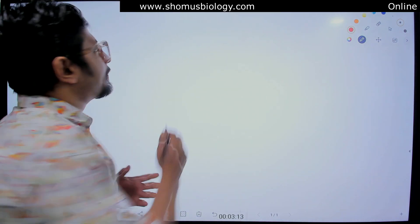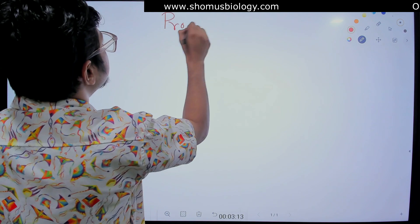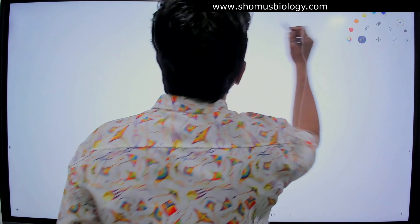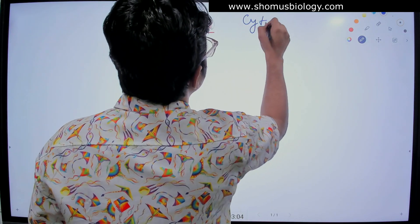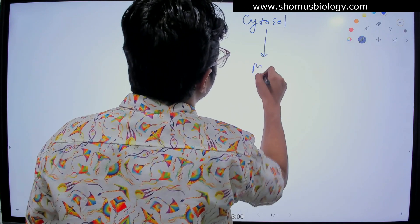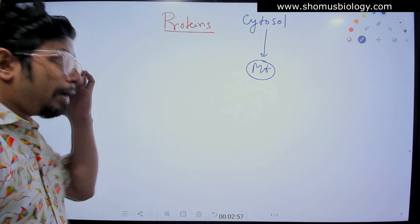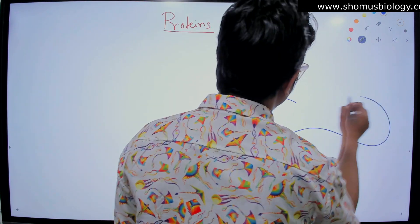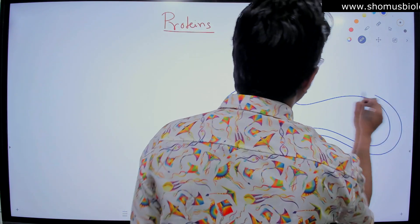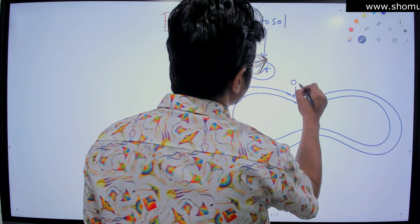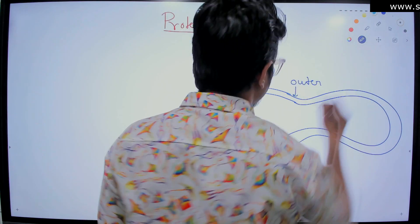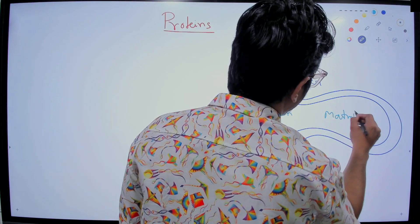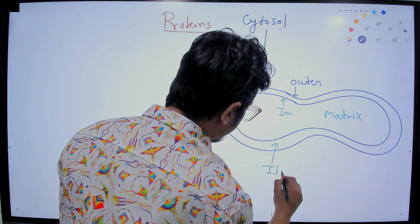What we need to talk about is protein translocation inside mitochondria. The journey of a protein we are going to discuss is from the cytosol to mitochondria. Now, if I draw the structure of mitochondria, it will be clear that mitochondria have two membranes — we have the outer membrane and the inner membrane — and we have the matrix. We also have the intermembrane space.